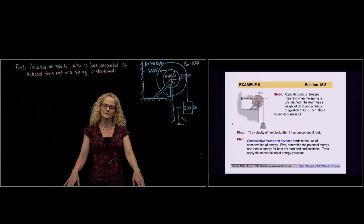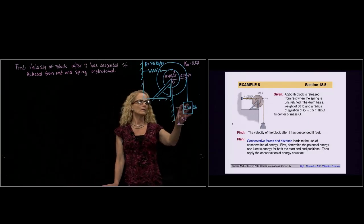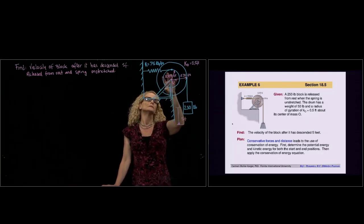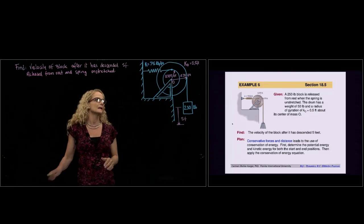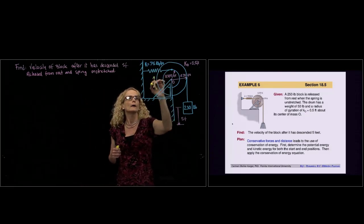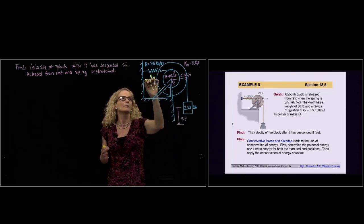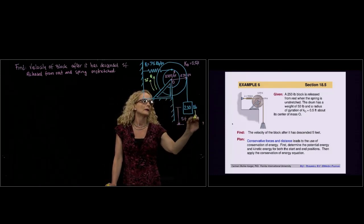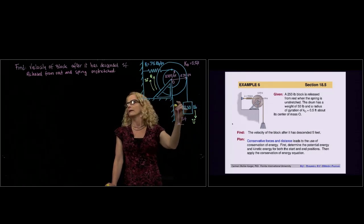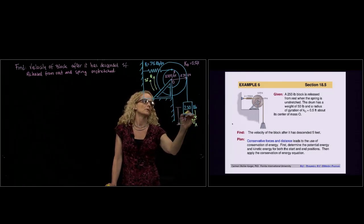This is example number six for section 18.5. We have a block that is connected to two gears or cylinders. Those two cylinders are attached to each other, so they rotate and displace with the same angular displacement and the same angular velocity. We also have the velocity of block A.